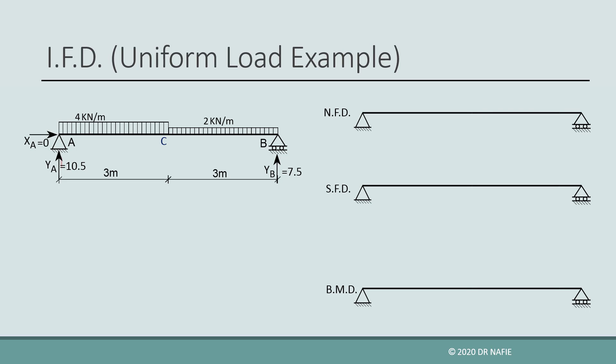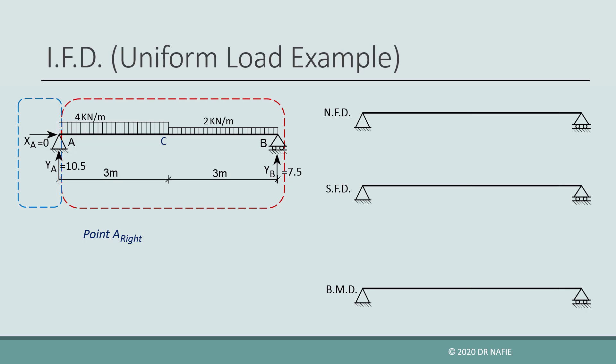We start at support A by evaluating the internal forces just to the right of point A. As detailed in a previous lecture, we calculate the internal forces at a point by dividing the beam into two parts at that point and using the forces in only one of the two parts. We are free to use any one of the two parts, but take care that the sign convention for the left part is opposite to that of the right part. For the current point, we will work on the left part and display the sign convention on the left part for our reference.